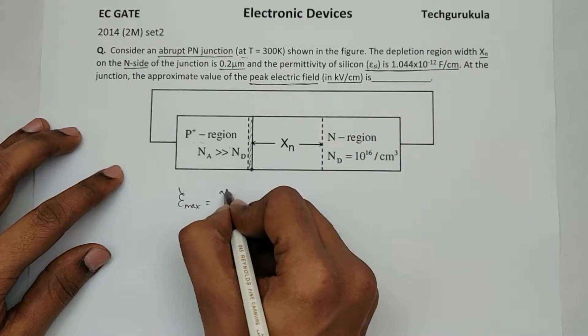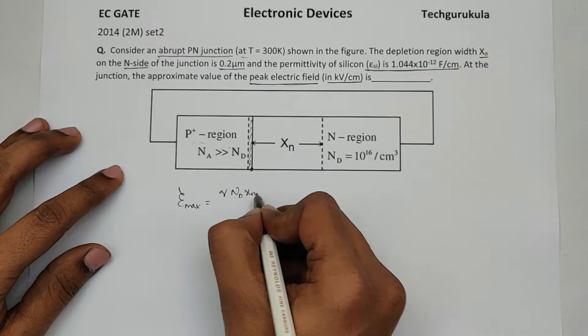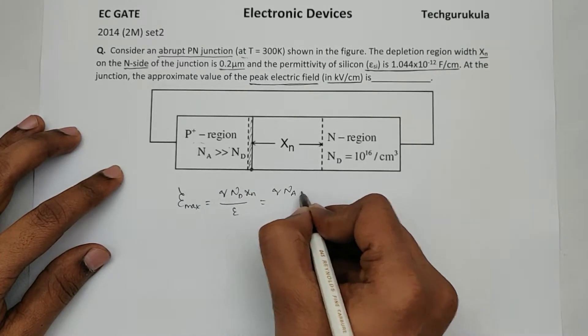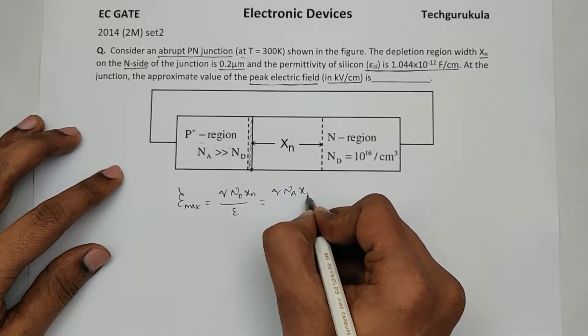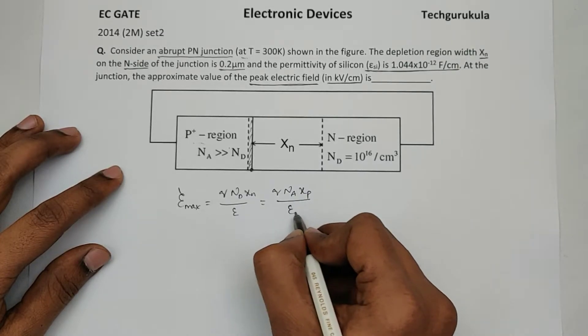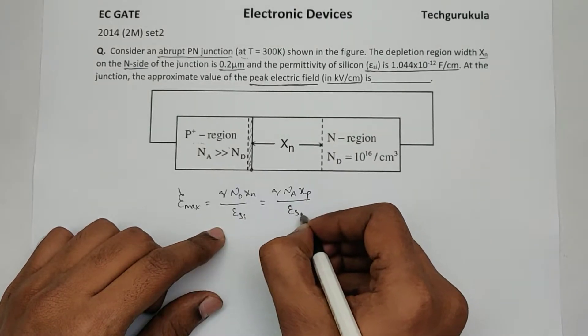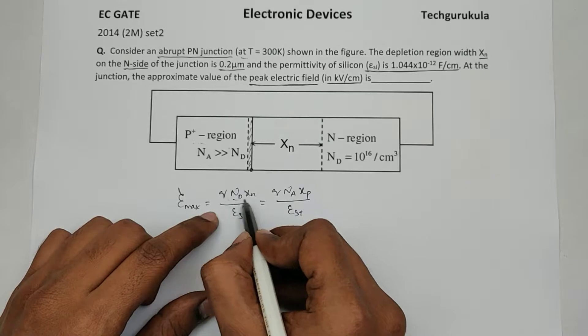Now the question is to find the electric field max. We know that max electric field is given by q times N_D X_n over epsilon, which is also in fact equals to q N_A X_P over epsilon. Okay, this is epsilon_si.